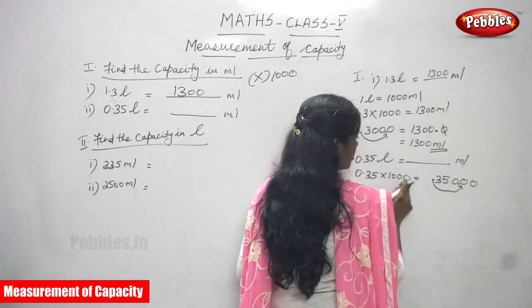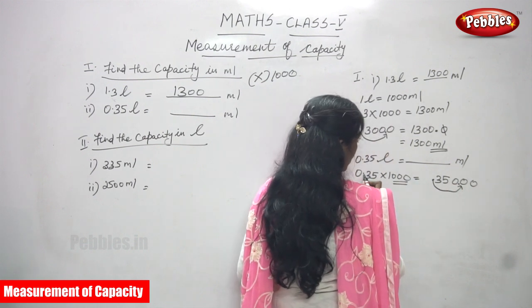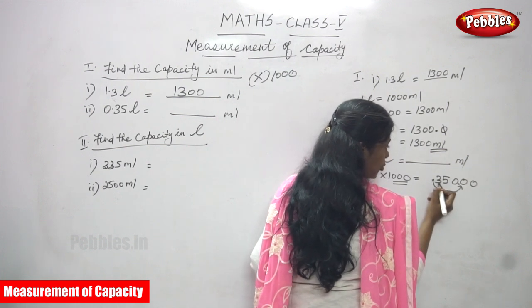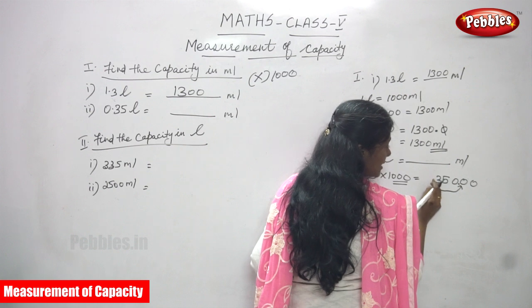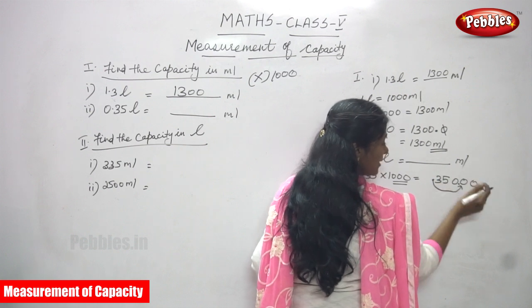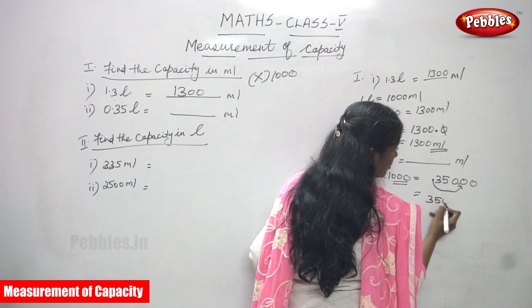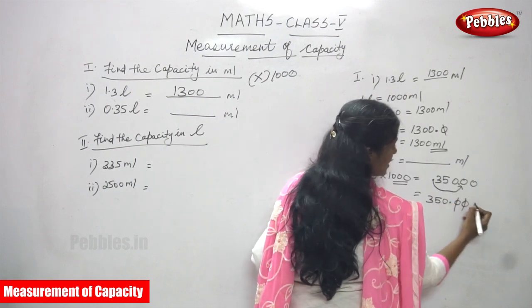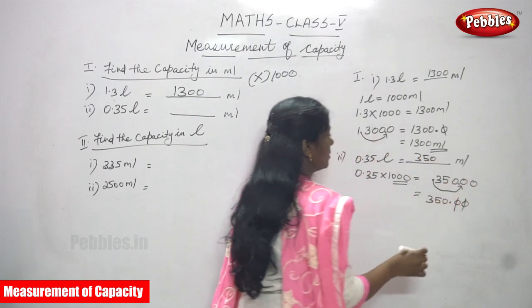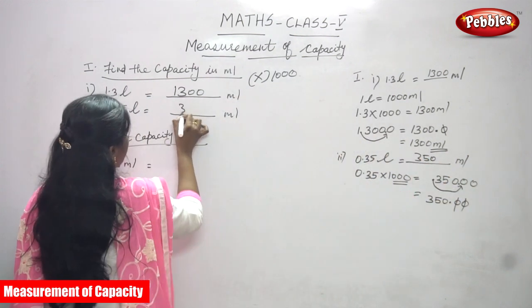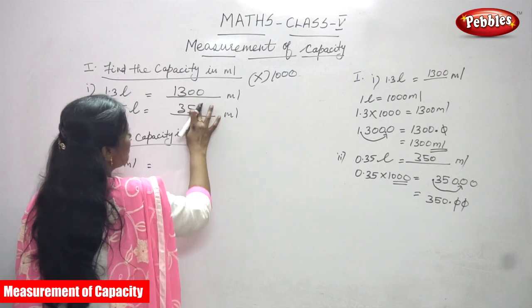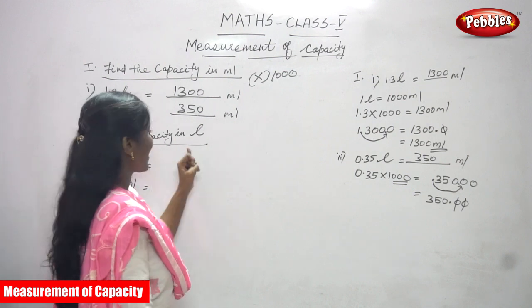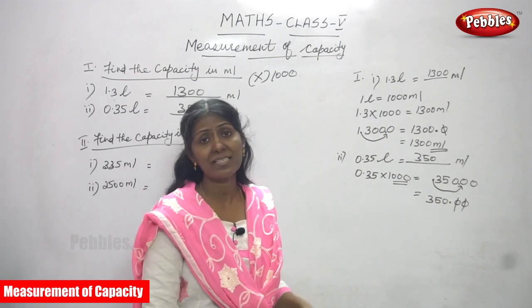This decimal point moves three places to the right — one, two, three. So you get 350, then point, then zeros. After the point you must cancel the zeros. The answer is 350 ml — milliliters. This is the right answer. Next: find the capacity in liters, meaning you have to convert milliliters into liters.